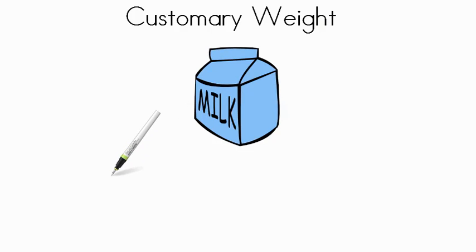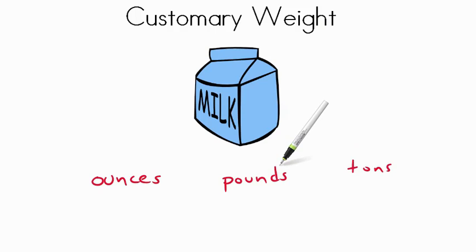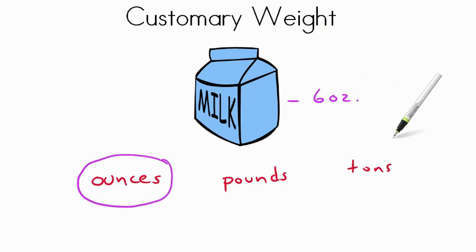Here we have a carton of milk. Which would you use to measure it? Would you use ounces, pounds, or tons? You're measuring a carton of milk, something you'd have at snack. If you said ounces, you are correct. A pint of milk might be about six ounces. It's a fairly light thing, a small thing. It wouldn't be a pound, not as heavy as a large book. This is something fairly small, and you'd use ounces. Nice job.